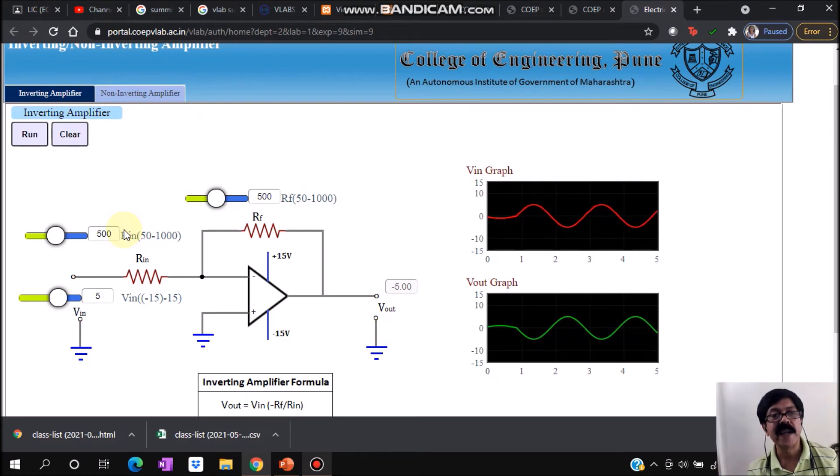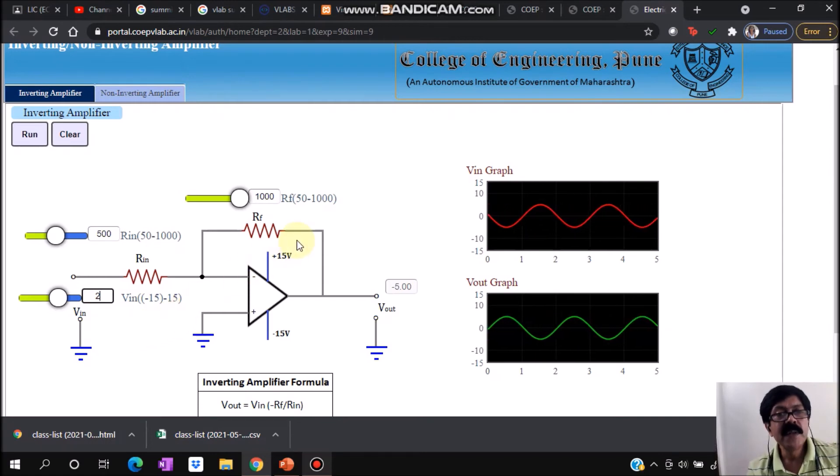Let us say I am selecting this gain. It has given a range of 50 to 1000, so I have a possibility to select like this one. Let's say I am selecting input as 2 volt. So my gain will be now -1000 upon 500, which is -2. So it should give -4 volt.